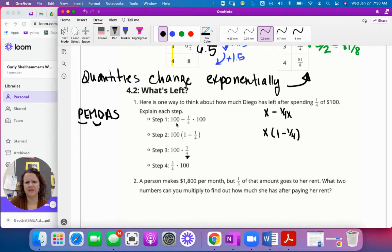Alright. So here's one way to think about how much Diego has left after spending a fourth of a hundred dollars. Explain each step. I have a hundred dollars initial amount and I'm subtracting a fourth of a hundred dollars because that's how much we spent. Okay. This is I have to subtract it out of my pocket because it's how much I spent. Then I'm just doing some math. Okay. I'm doing subtraction. So if I look at step three, 100 times three fourths is how much remains, it's how much in my pocket. If I spent a fourth of it, I have three fourths left and then reordering it. No big deal.